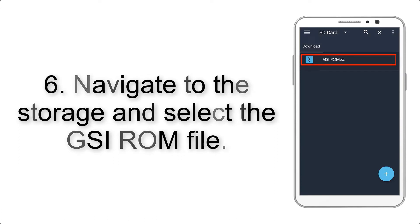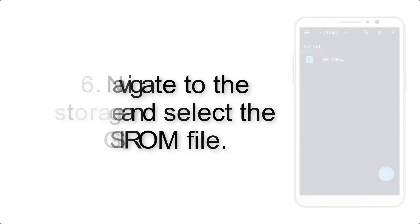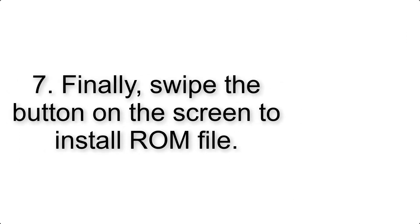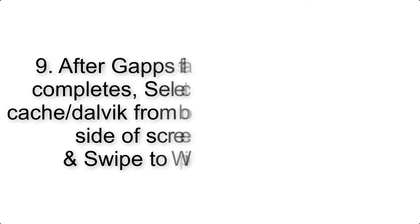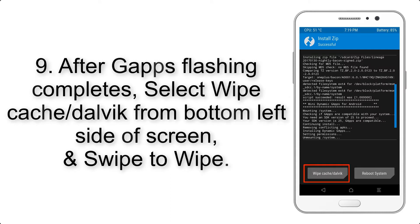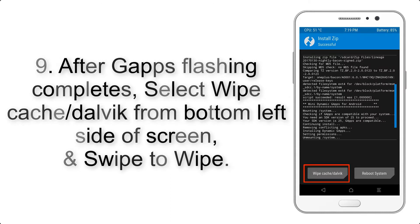Step 5: Go back to the recovery main screen and tap on the Install button. Step 6: Navigate to the storage and select the GSI ROM file. Step 7: Swipe the button on the screen to install the ROM file. Step 9: After GApps flashing completes, select Wipe Cache and Dalvik from the bottom left side of the screen and swipe to wipe.